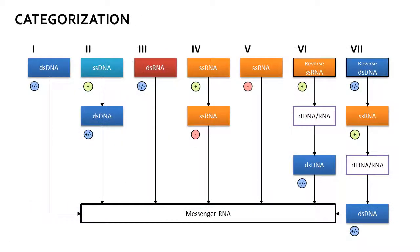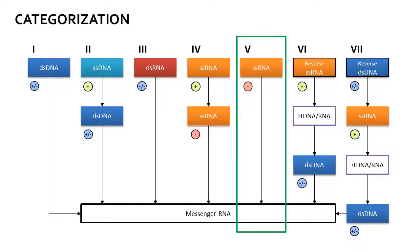The virus belongs to Group 5 in the Baltimore classification and contains a linear negative sense single-stranded RNA. The virus also contains the RNA-dependent RNA polymerase, or polymerase L, necessary to transcribe the negative sense single-stranded RNA into positive sense messenger RNA. As a Group 5 virus, the messenger RNA is made directly from the negative sense template.